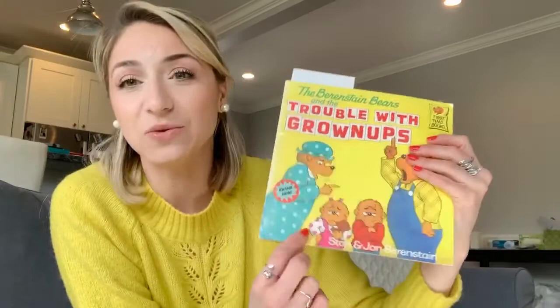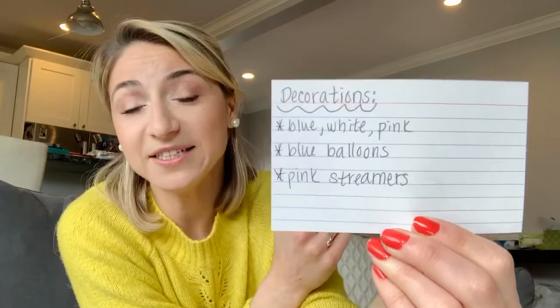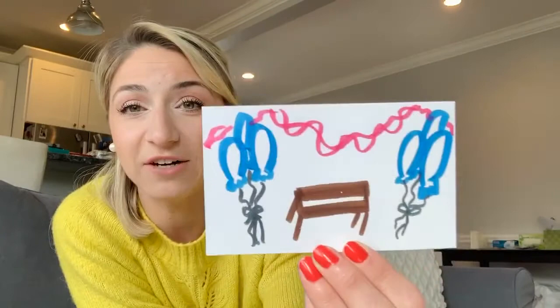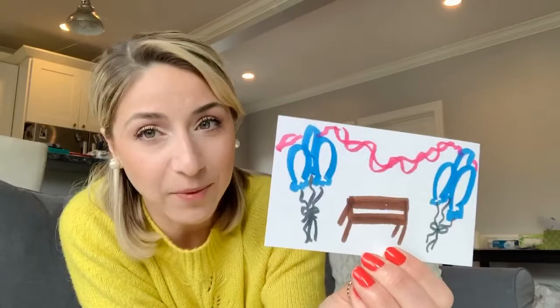Now I have to think about what kind of decorations I'll have — how am I going to decorate this Bear Treehouse? Since I'm throwing the party for Mama Bear and Sister Bear, I'd keep their colors as part of my decoration theme. Mama Bear always loves to wear a blue dress and blue bonnet with white polka dots, and Sister Bear also wears polka dots but in pink and white. So my decorations are going to be blue, white, and pink, and polka dotted. The balloons will be blue and the streamers will be pink. I drew a picture of what the inside of the treehouse would look like — a table, blue balloons, and pink streamers up top.